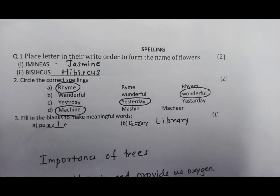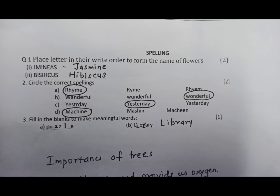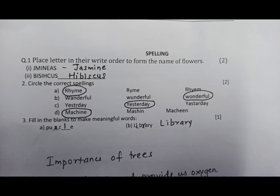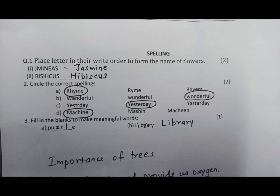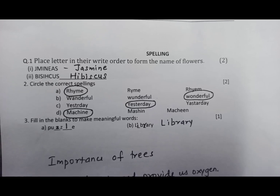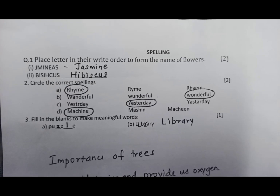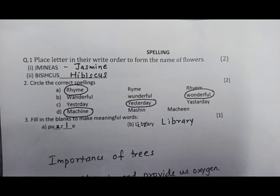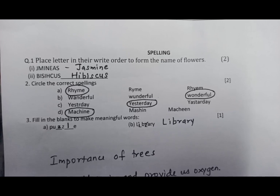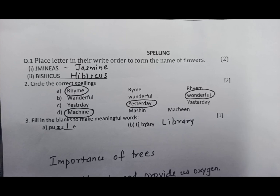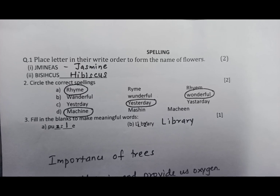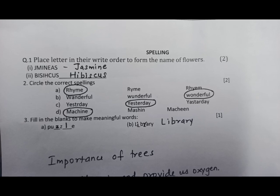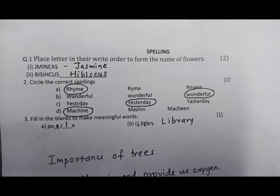Coming towards the last section of spelling. Place letters in their right order to form names of flowers — the first one is jasmine, and the second is hibiscus. Circle the correct spellings: rhyme (R-H-Y-M-E), wonderful, yesterday, machine. Fill in the blanks to make meaningful words — the first one is puzzle, and the second one is library.